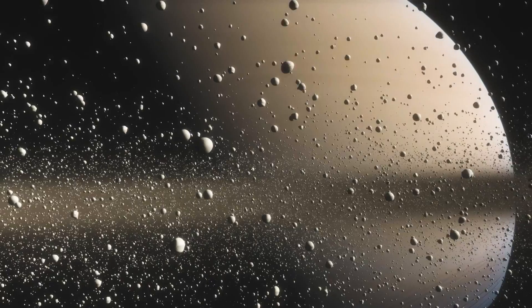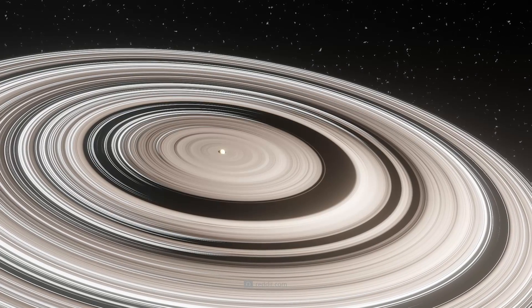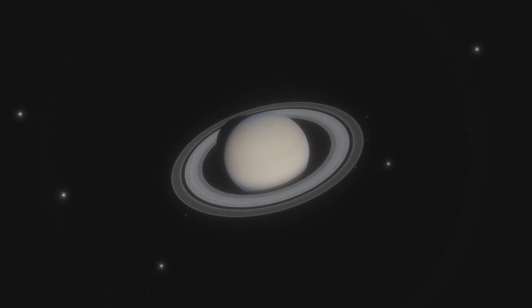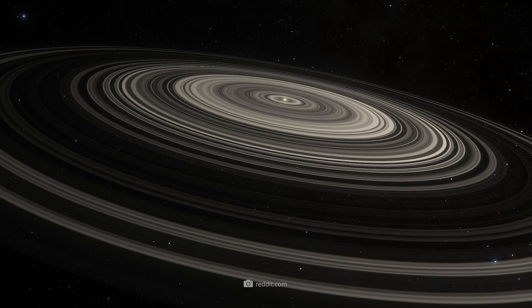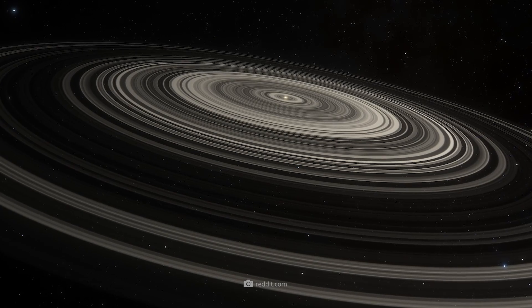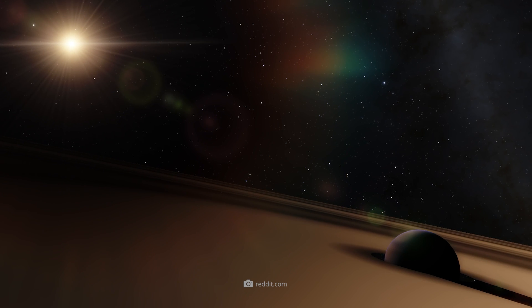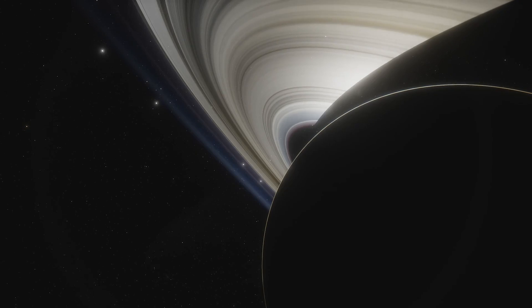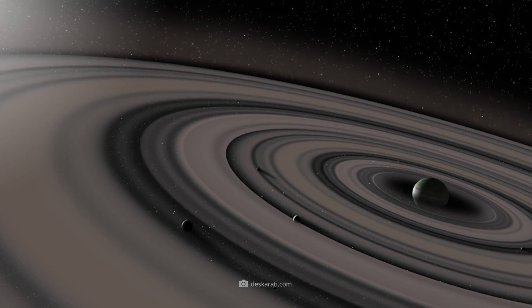Super Saturn: The reason why exoplanet J1407b is rightly called Super Saturn becomes clear when we take a look at the enormous ring system surrounding the celestial body, which is 430 light-years away from us. While the hundreds of thousands of ring orbits of Saturn already leave us agog, the rings of J1407b surpass all dimensions imaginable so far. While Saturn's outermost ring has a diameter of about 600,000 miles, the counterpart of J1407b has a diameter of 75 million miles.